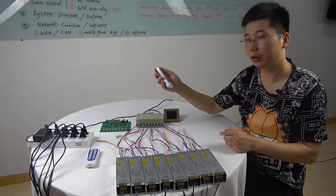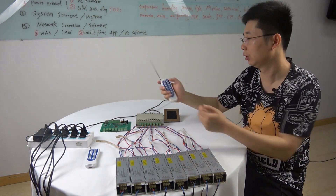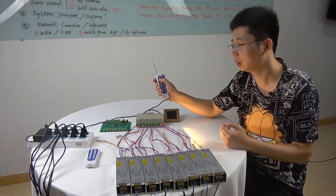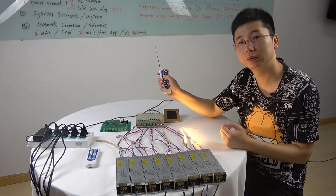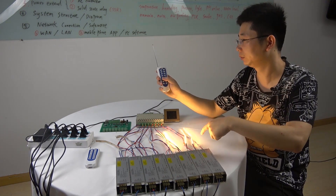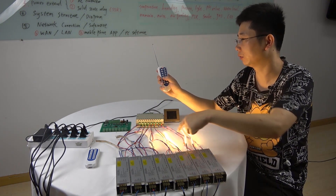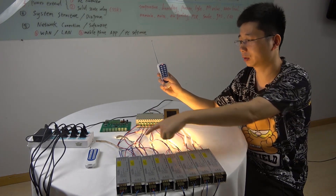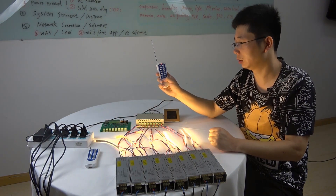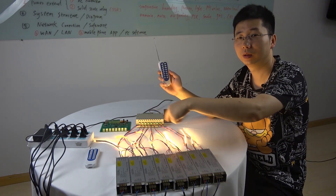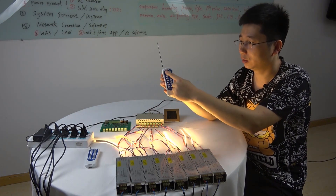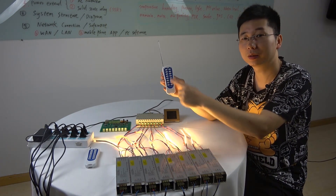We can also use this remote. For increase, I can turn on every channel. You can see the eight channels are all on and the brightness is at the highest. This button is for increased brightness and this is for decreased brightness.